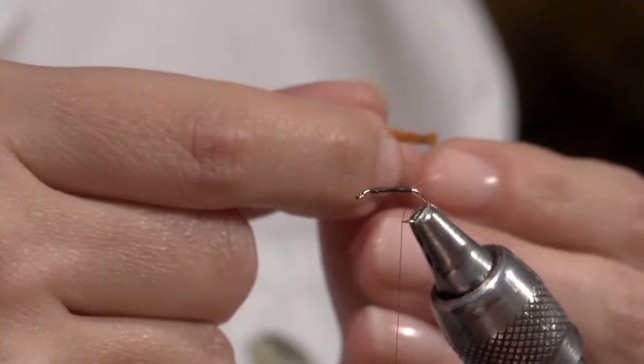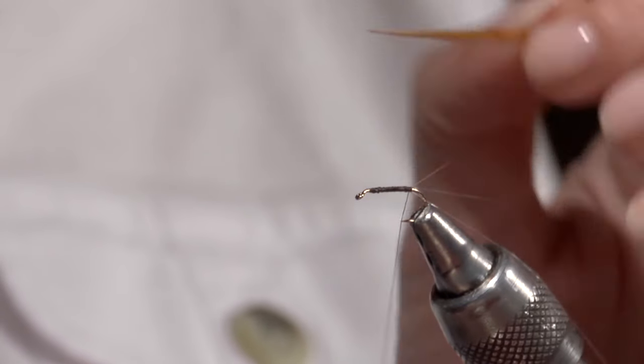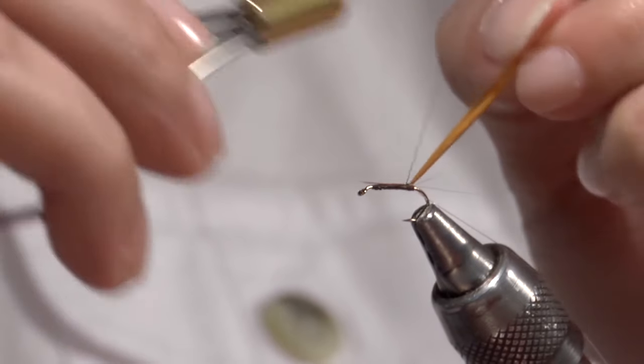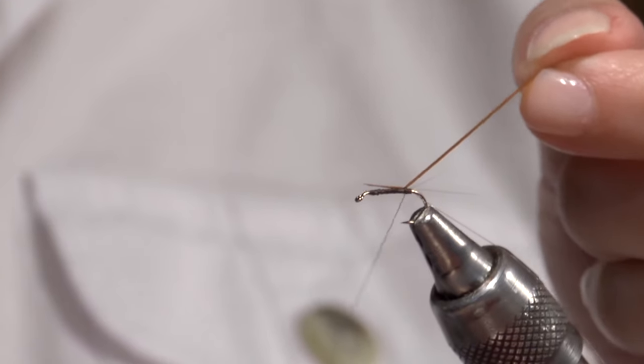I want a smooth body on this rusty spinner. So I'm going to tie this biot in tip first. And I want the clear side of the biot to face away from me.